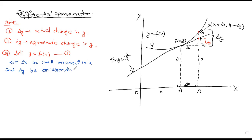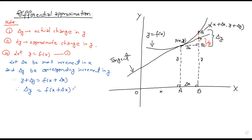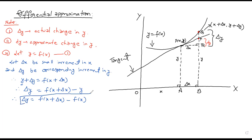Delta y is the corresponding increment in y. Therefore, y plus delta y equals f(x plus delta x). The actual change is delta y equals f(x plus delta x) minus y, which equals f(x plus delta x) minus f(x). That is the required formula to calculate the actual change in y.